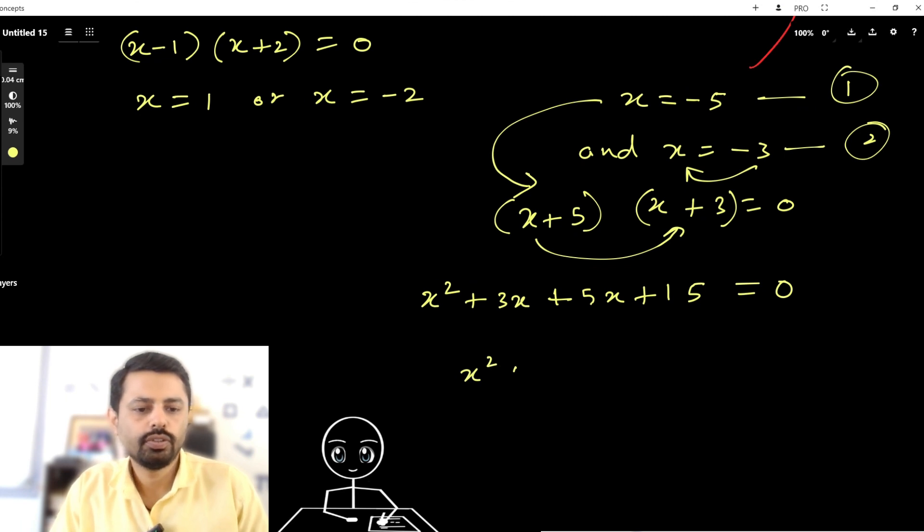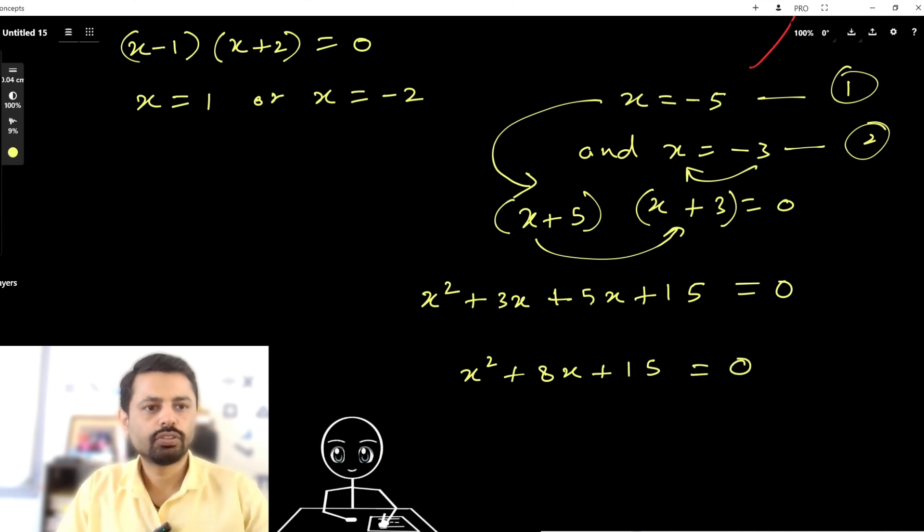x² + 8x + 15 equals 0. In this question, you get the zeros equal to -5 and -3. But you know one thing: if you multiply this whole thing with a 2, then also the answer will be the same, -5 and -3.